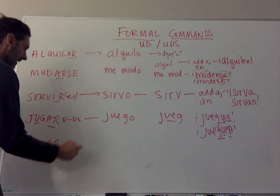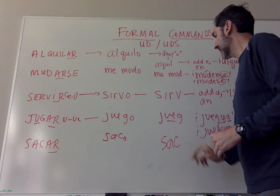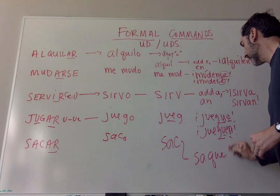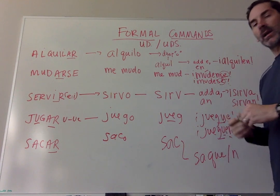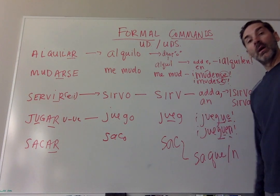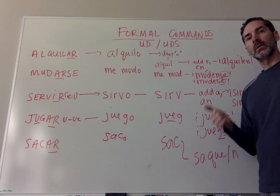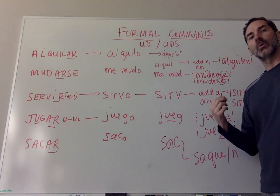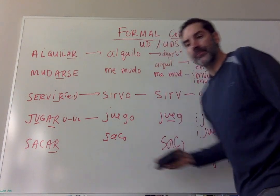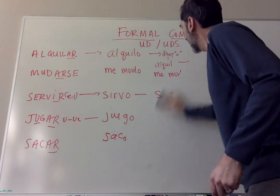One more: sacar. Yo form: saco. Drop the O: sac. But Spanish wants to spell it with a Q — saque or saquen. Saque la basura, usted, por favor. Saquen la basura, ustedes, por favor. Quick wrap-up: take your verb, start with the yo form, drop the O, add opposite endings. To an AR verb you add ER/IR endings; to an ER/IR verb you add AR endings.